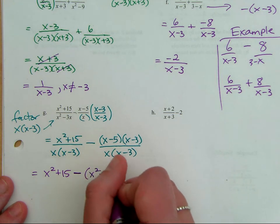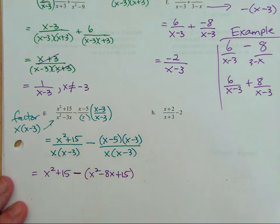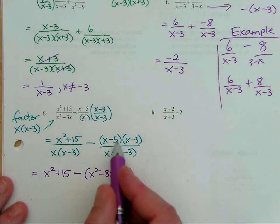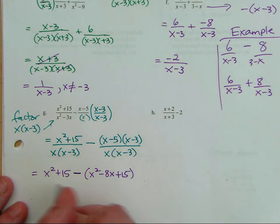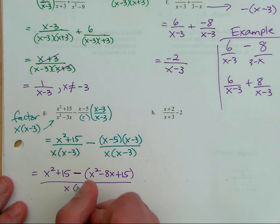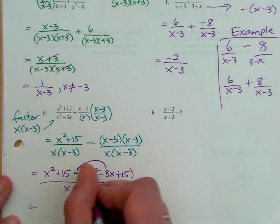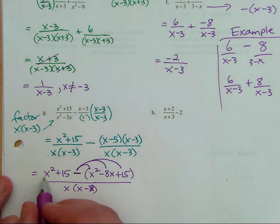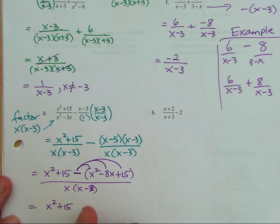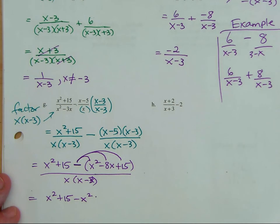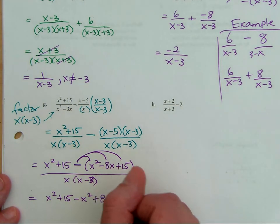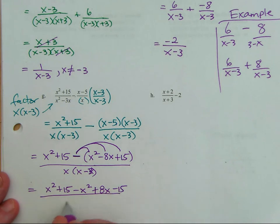I have X squared plus 15 minus — I'm going to keep the whole thing in parentheses when I FOIL it out, because eventually I'm going to have to distribute that negative sign. So I get X squared minus eight X plus 15. That's my FOIL — I just added and multiplied. This is all over the common denominator. Now if I distribute the negative, it changes the sign of everything. So I have X squared plus 15 minus X squared, plus 8X minus 15, over X times X minus 3.